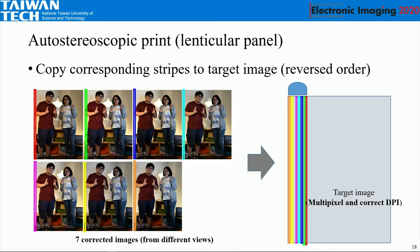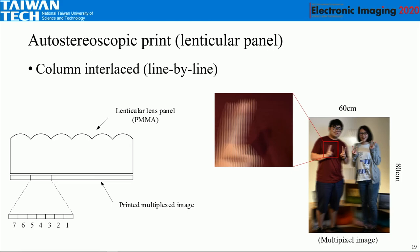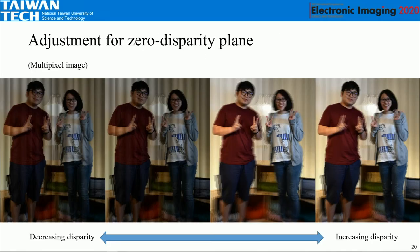Finally, we want to export the autostereoscopic print. We need to interlace the image into a multipixel image — a simple procedure where we crop column by column and insert the columns into one lenticular lens cylinder. In each cylinder, we have seven column images inside. We use PMMA material of around four millimeters thickness. We also have software to adjust the zero disparity plane — to increase or decrease the disparity as needed.